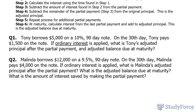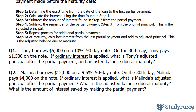Let's begin with step number one. Step one tells us to determine the exact time from the date of the loan to the first partial payment. That's easy — we're told that he paid 30 days after taking the loan, so I'll write down 30.